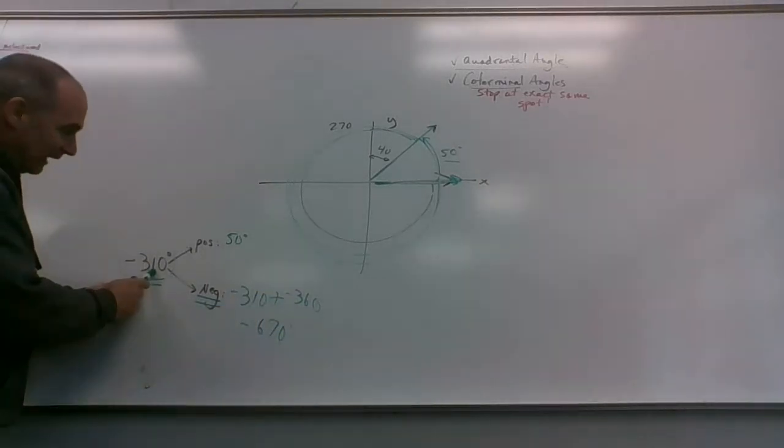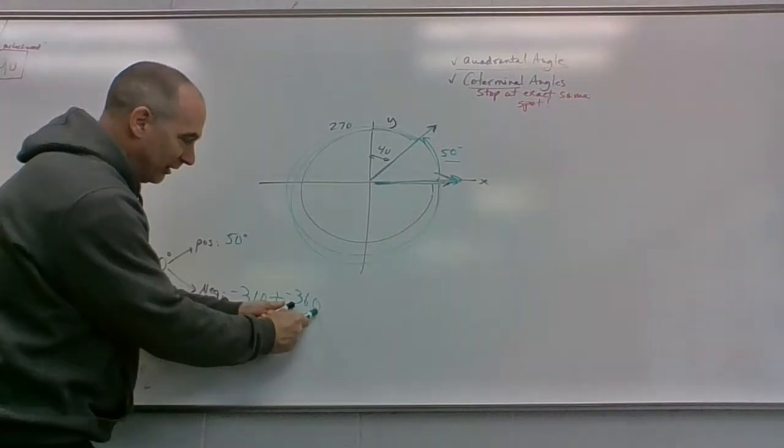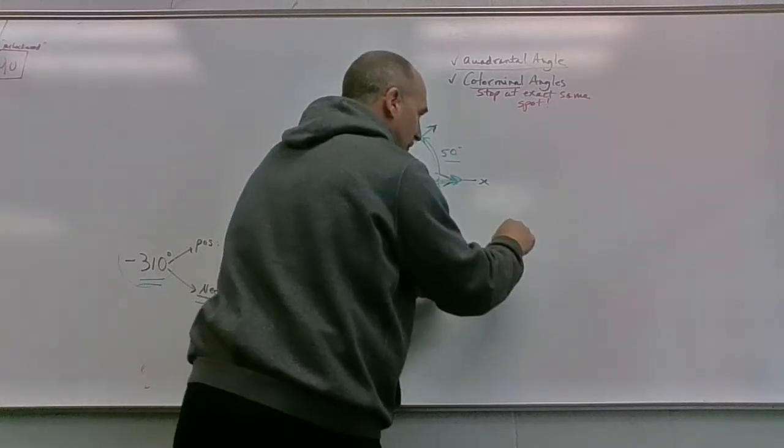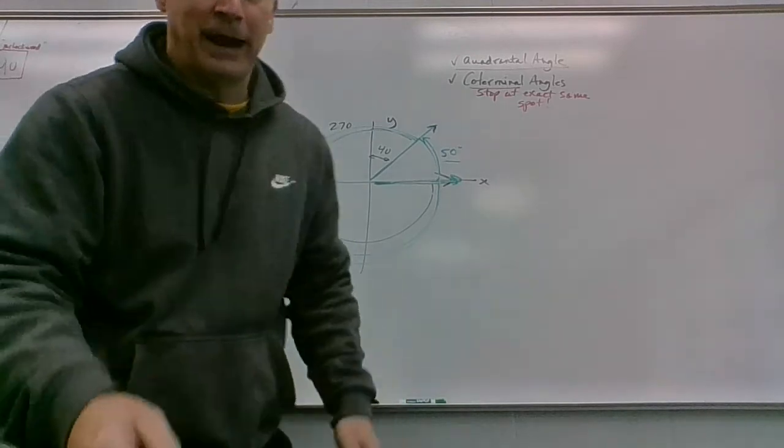So if the original is negative, you're going to take the original and just add a negative 360 to it. I wish I wouldn't have erased this, but if the original is positive, you're going to spin it that positive direction and then add another 360 to it. I hope you picked up on that little pattern.